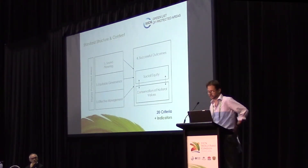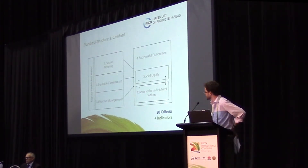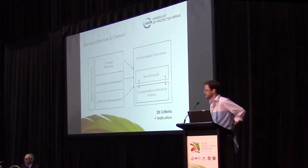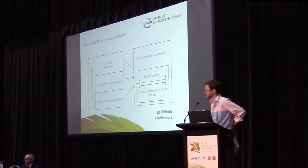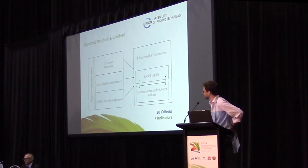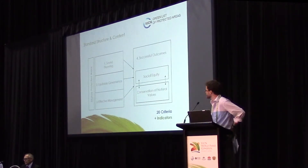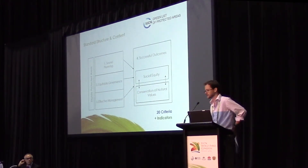The content and structure of the standard is divided into four pillars — some other standards would call those principles. The four pillars of the GLPA standard are sound planning, equitable governance, and effective management as the three base pillars. In each of those three base pillars, there's a strong social component and a strong natural values component — it's in the DNA of all three pillars. Getting those right, building on management effectiveness, leads to successful outcomes. The fourth pillar, or capstone, asks: are the outcomes successful? That means, is social equity being achieved in the protected area, and is it succeeding in the conservation of the natural values it is intended to protect?